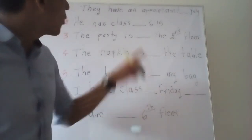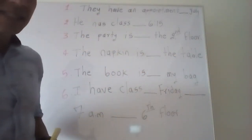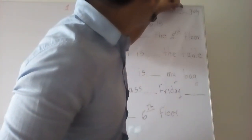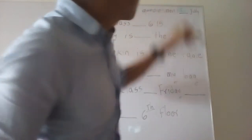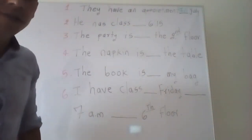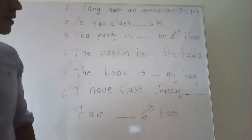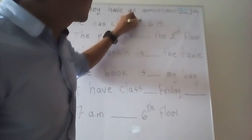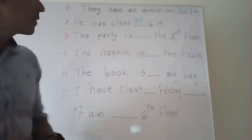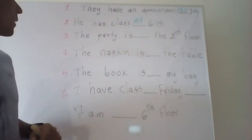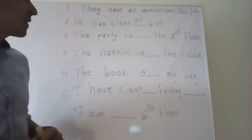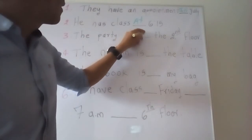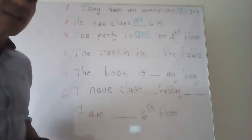Let's get started with more examples. Number one: They have an appointment ___ July. Answer: 'in July' — July is a long period. Number two: He has class ___ — the answer is 'at' because it's a precise time. Number three: The party is ___ — it's a place, on the second floor.